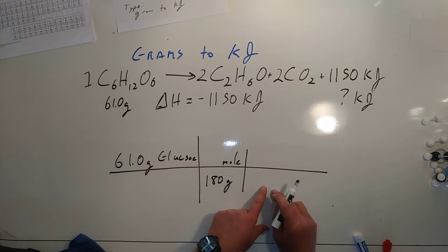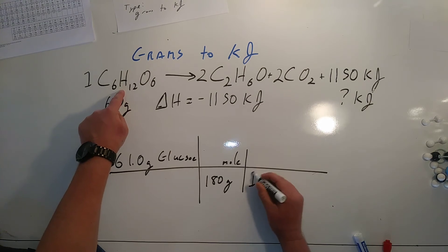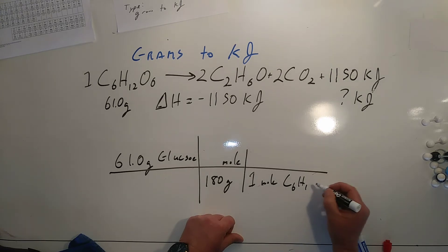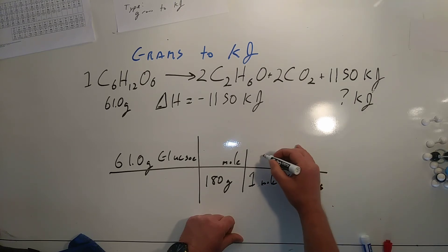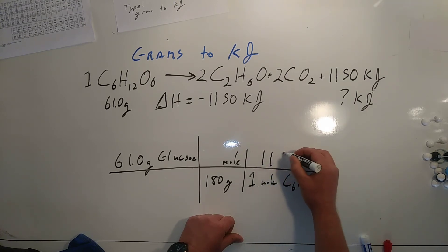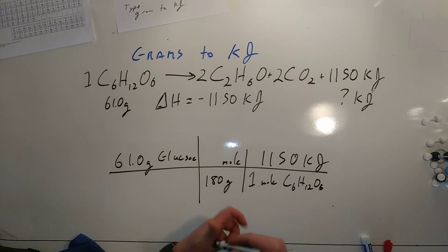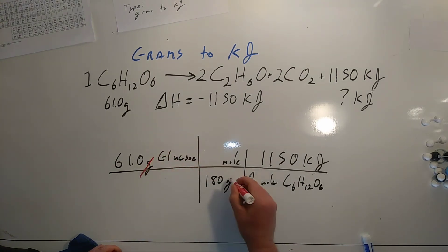The second step is using the balanced chemical reaction. One mole of glucose produces 1,150 kilojoules of energy. All of our units cancel.